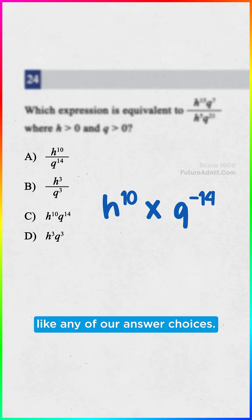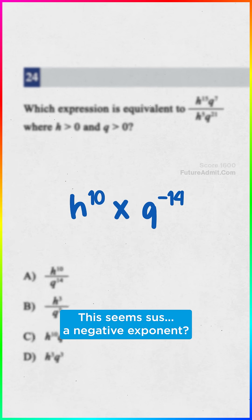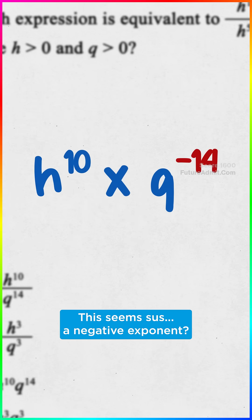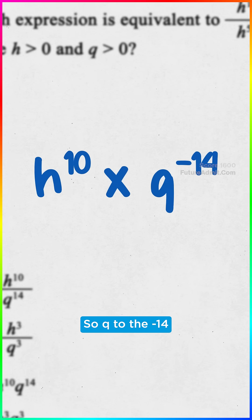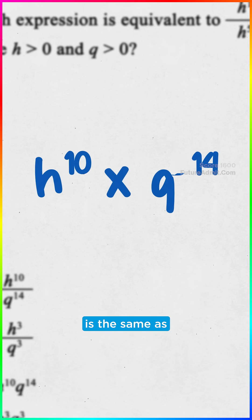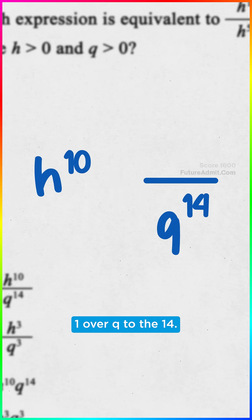That doesn't look like any of our answer choices. Crap. Okay, this seems sus. A negative exponent? That means we can just flip it to the bottom. So q to the negative 14 is the same as 1 over q to the 14. It's A!